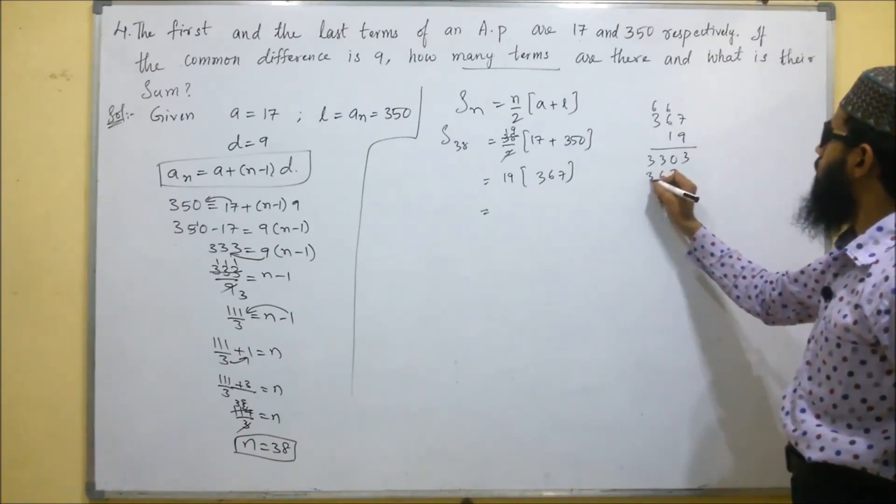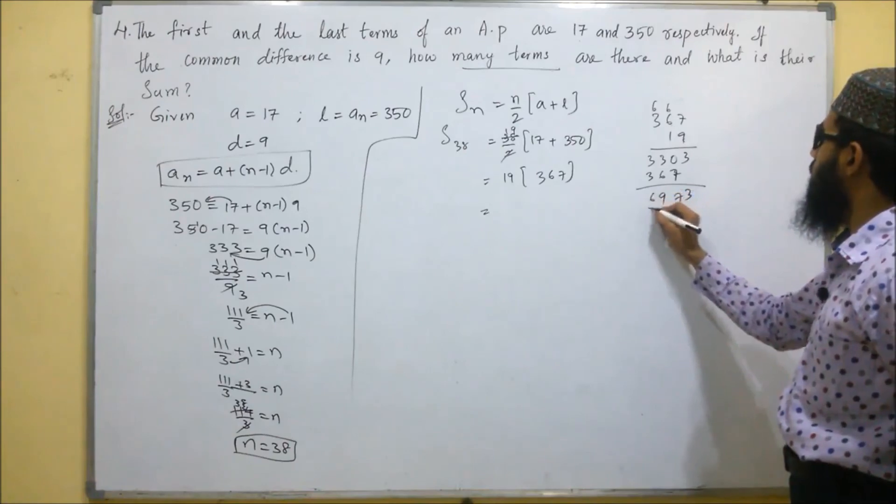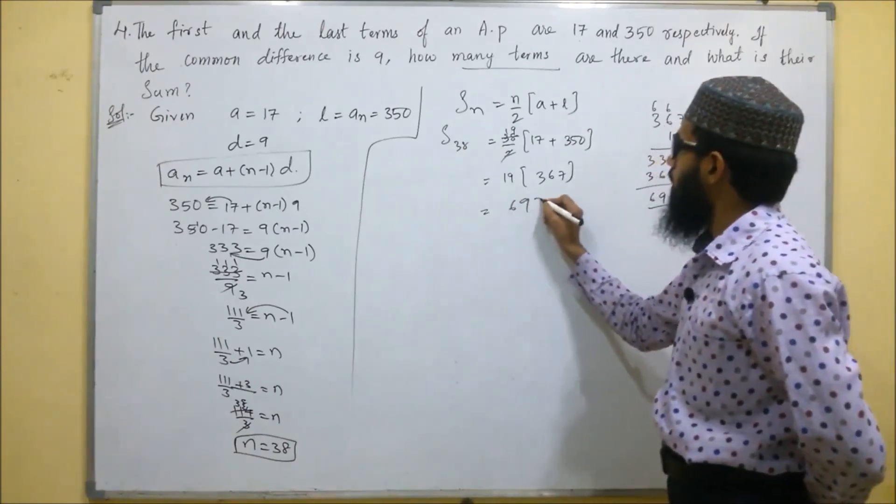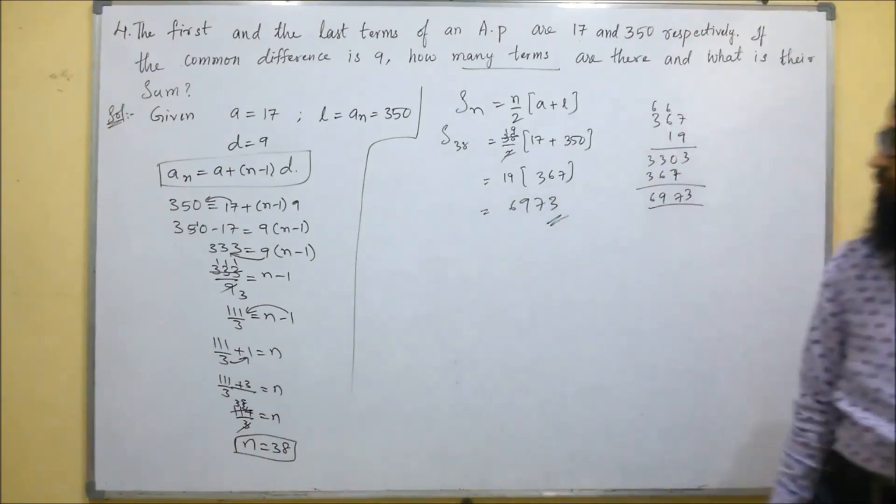1, 7's are 7. 1, 6's are 6. 1, 3's are 3. So 6973. The answer is 6973.